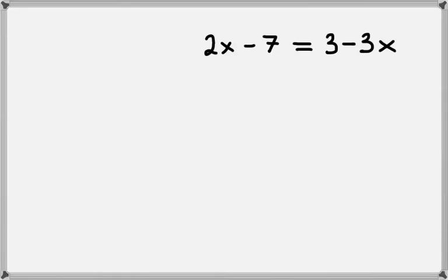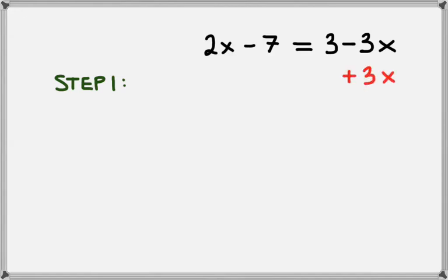Let's look at the equation 2x minus 7 equals 3 minus 3x. We'll solve this equation in three steps. The first step is going to be to get the two x terms combined. So the way we'll do that is we'll add 3x to the right hand side, and since we did that to the right hand side, we also need to do it to the left hand side — adding 3x below the 2x to combine the like terms.